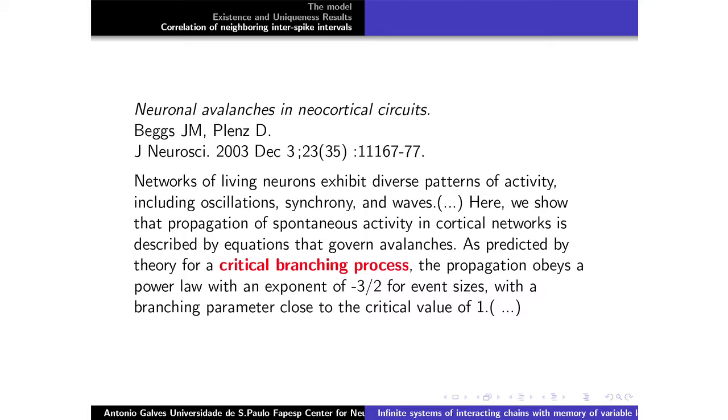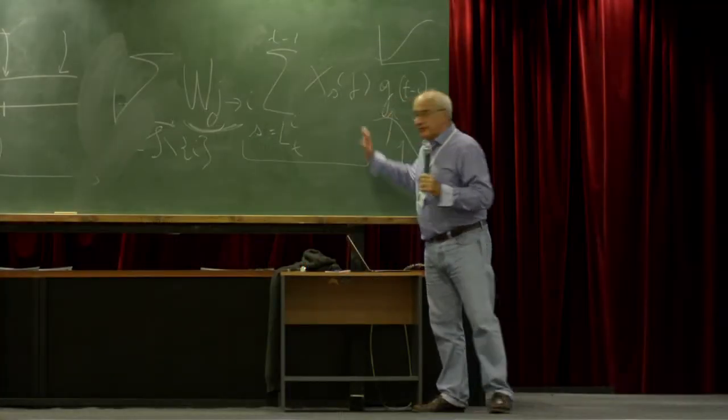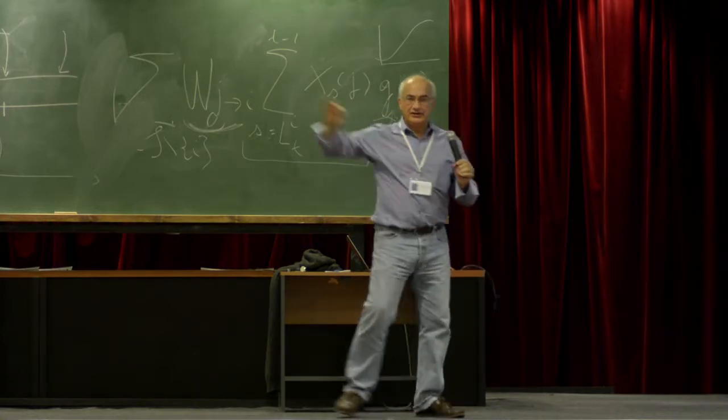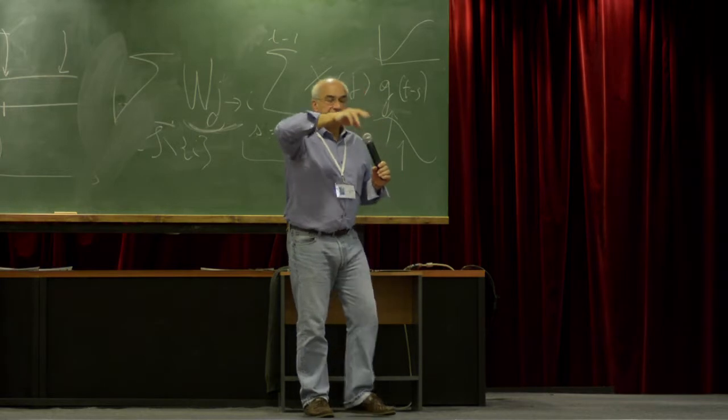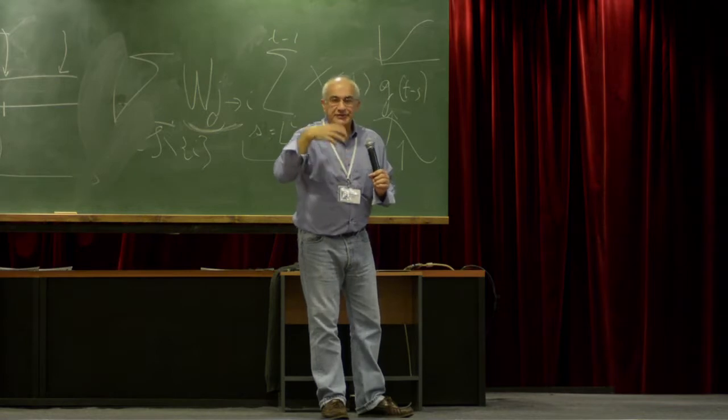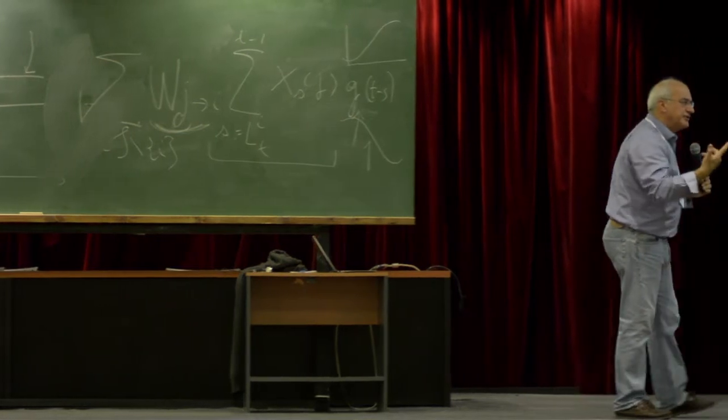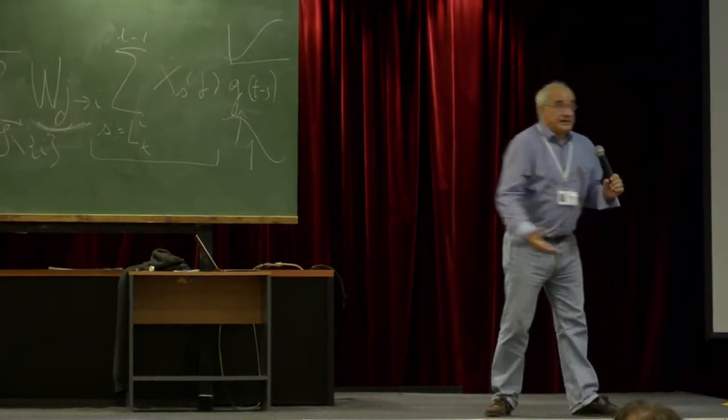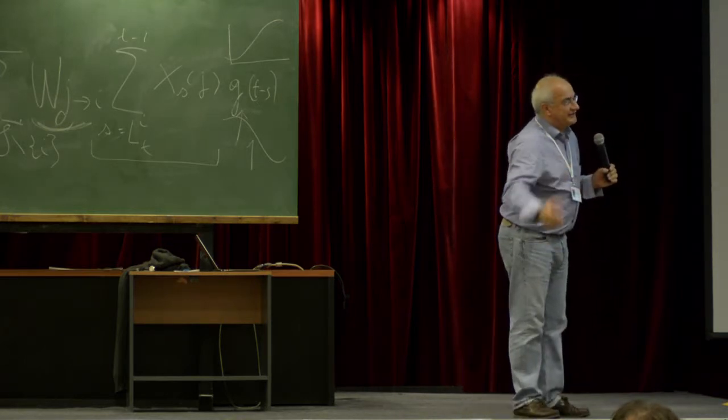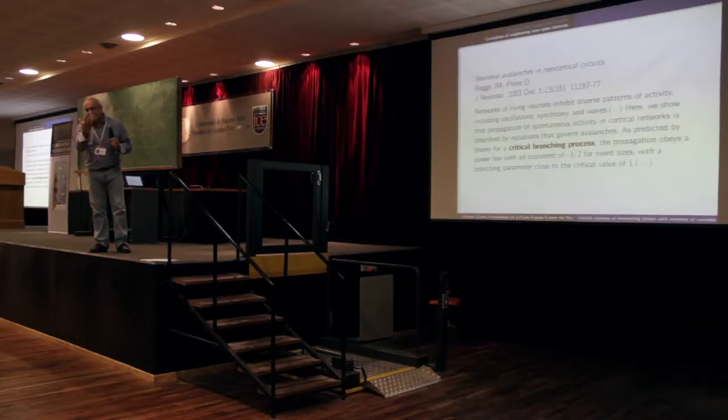And now there is this wonderful paper by Beggs and Plenz. Wonderful because it's well-written, lots of interesting ideas. They claim that they have experimental evidence in favor of slightly over-critical branching random graphs. So I will explain what is a branching random graph. But the branching random graph, locally, it's a branching graph. And in the supercritical case, it has just a giant component. So our goal is to be this giant component. So we will be slightly over the critical point. And I'm quoting here the paper by Beggs and Plenz. So you see, I put in red. They claim that they found a critical branching process. They claim.